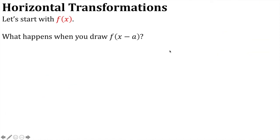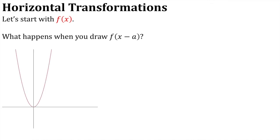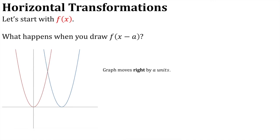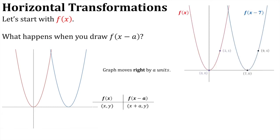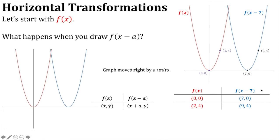This time we'll draw f(x − a). f(x + a) moves to the left and f(x − a) moves to the right. We can see it moves to the right by a units, and the effect on the points is (x + a, y). Looking at a specialised example using the points (0, 0) and (2, 4): in the graph of f(x − 7), those become (7, 0) and (9, 4) — we've added 7 to both x-ordinates.